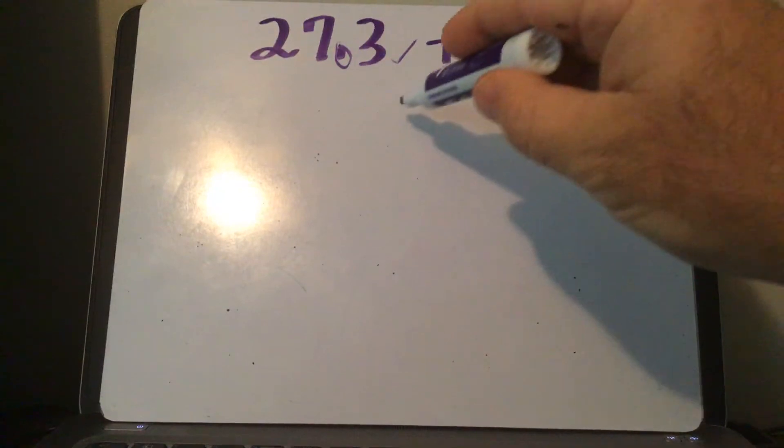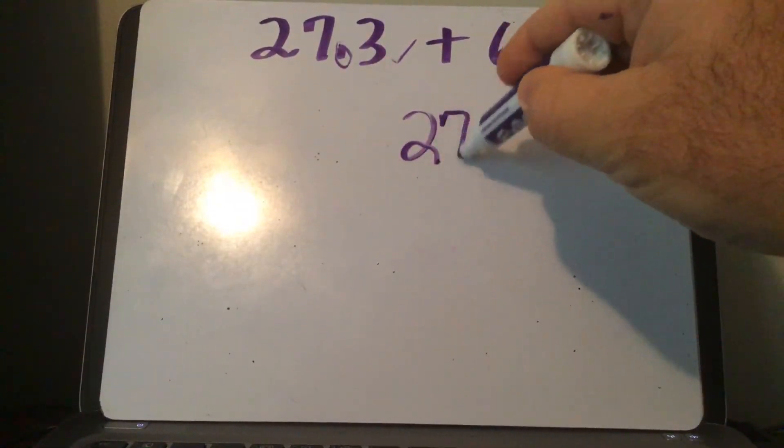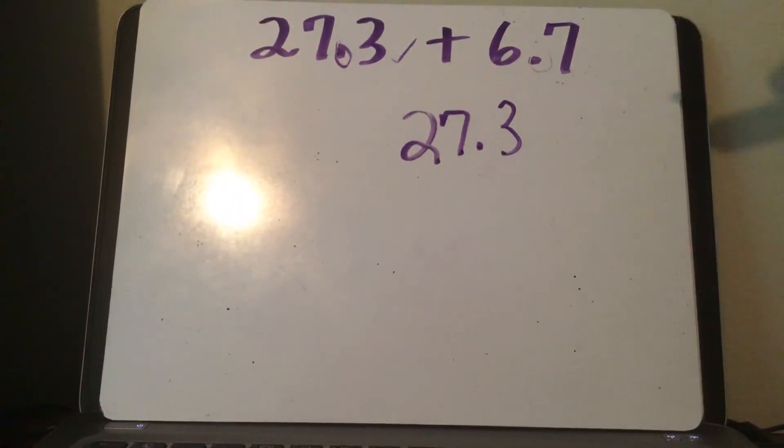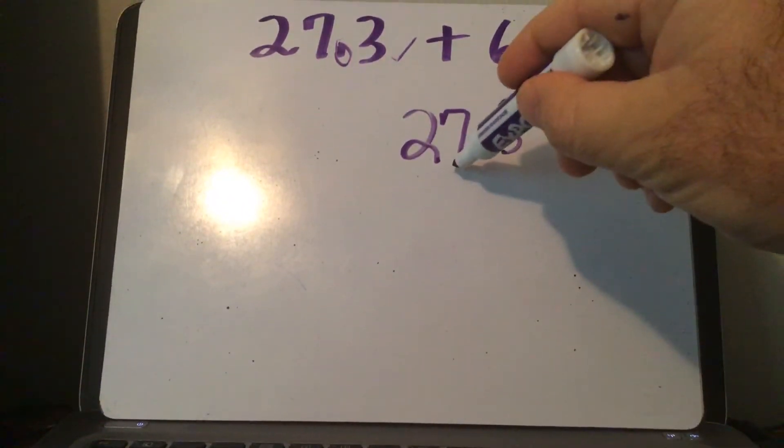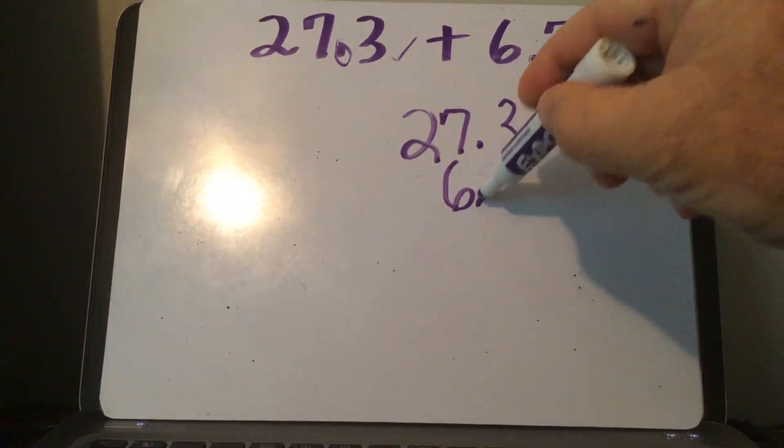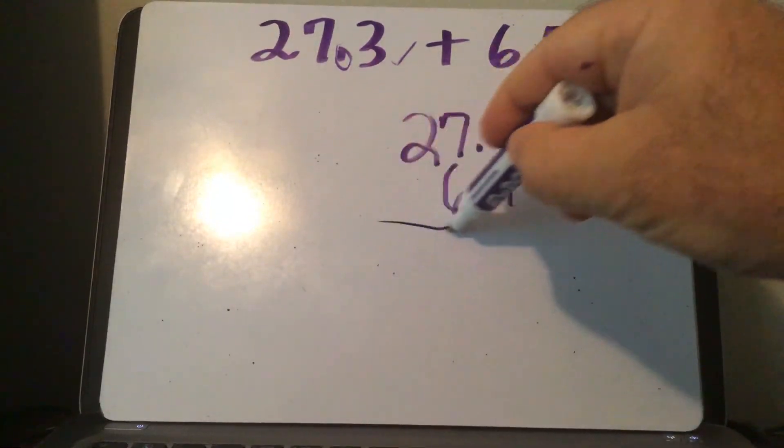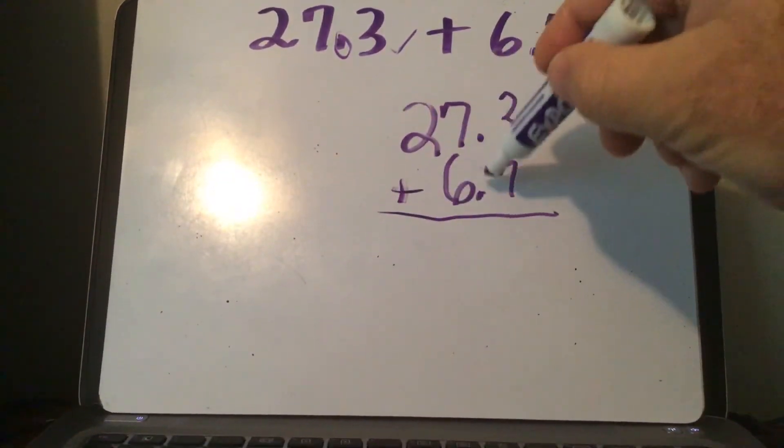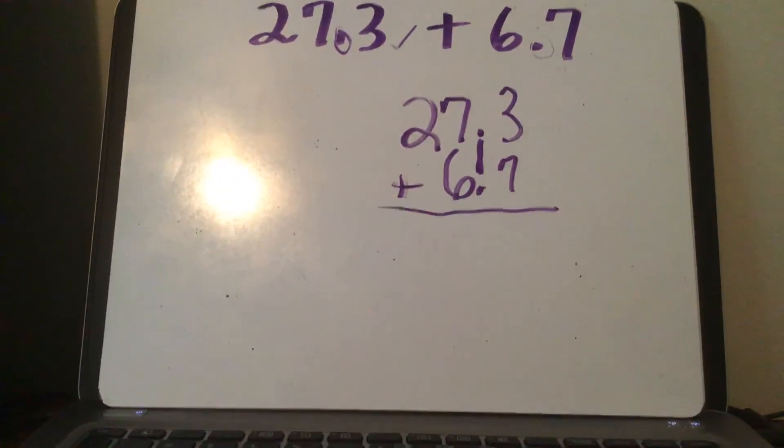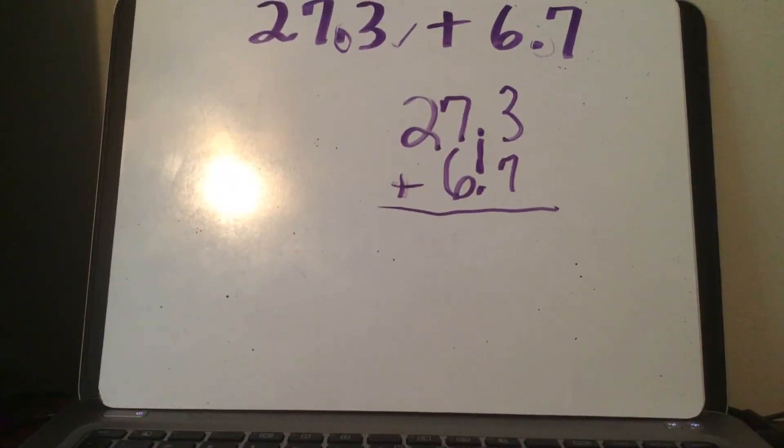So you're gonna go 27 and 3 tenths plus 6 and 7 tenths. I'm gonna line 6 and 7 tenths up, draw my line, and look at my decimals—they're lined up. That's exactly how you want them. You want them stacked up on one another.